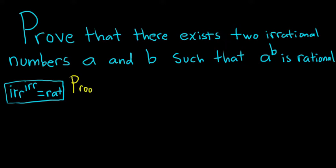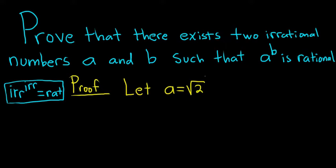This is a really, really famous proof. The proof goes as follows. We start by letting a be equal to the square root of 2 to the square root of 2, and b be equal to the square root of 2.